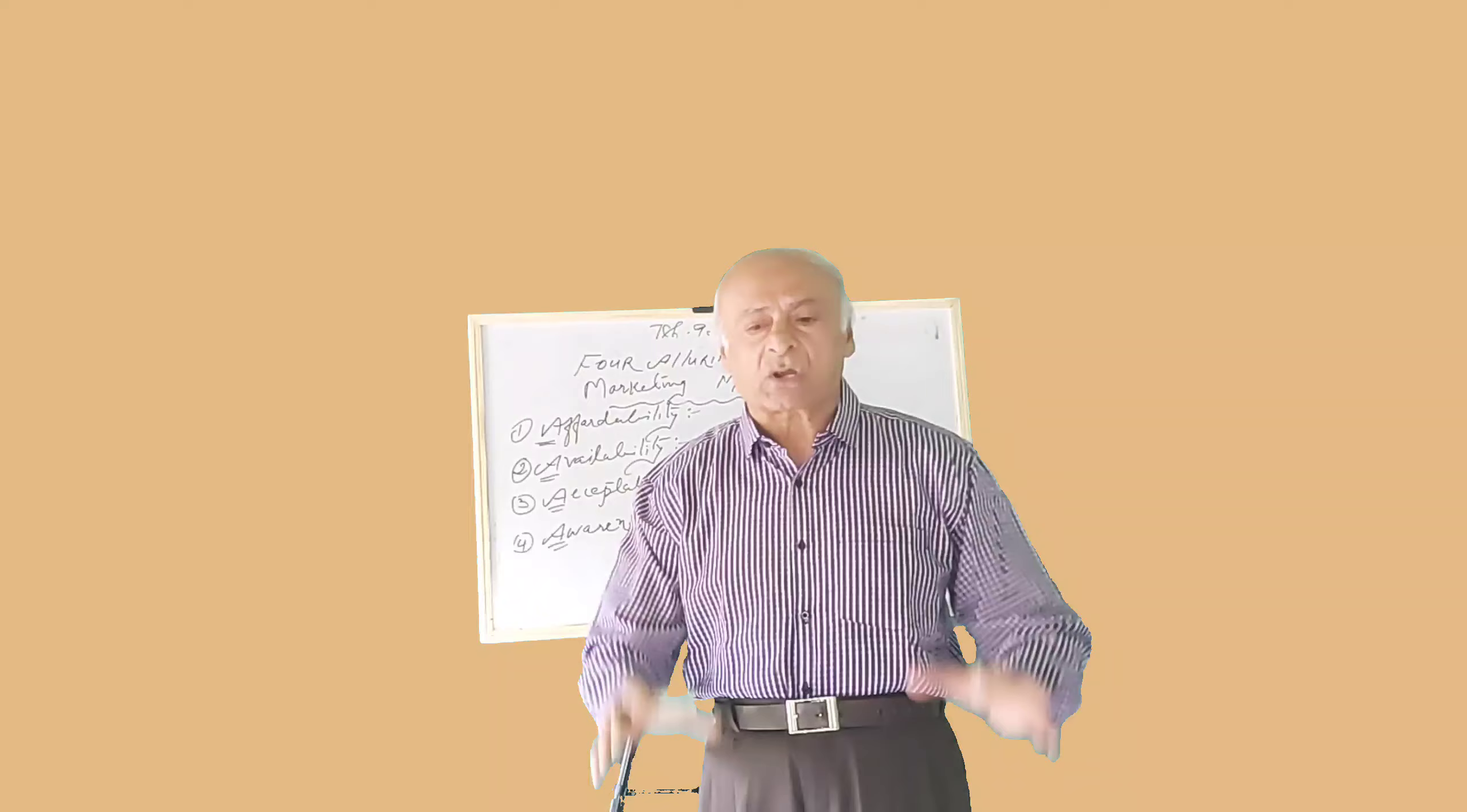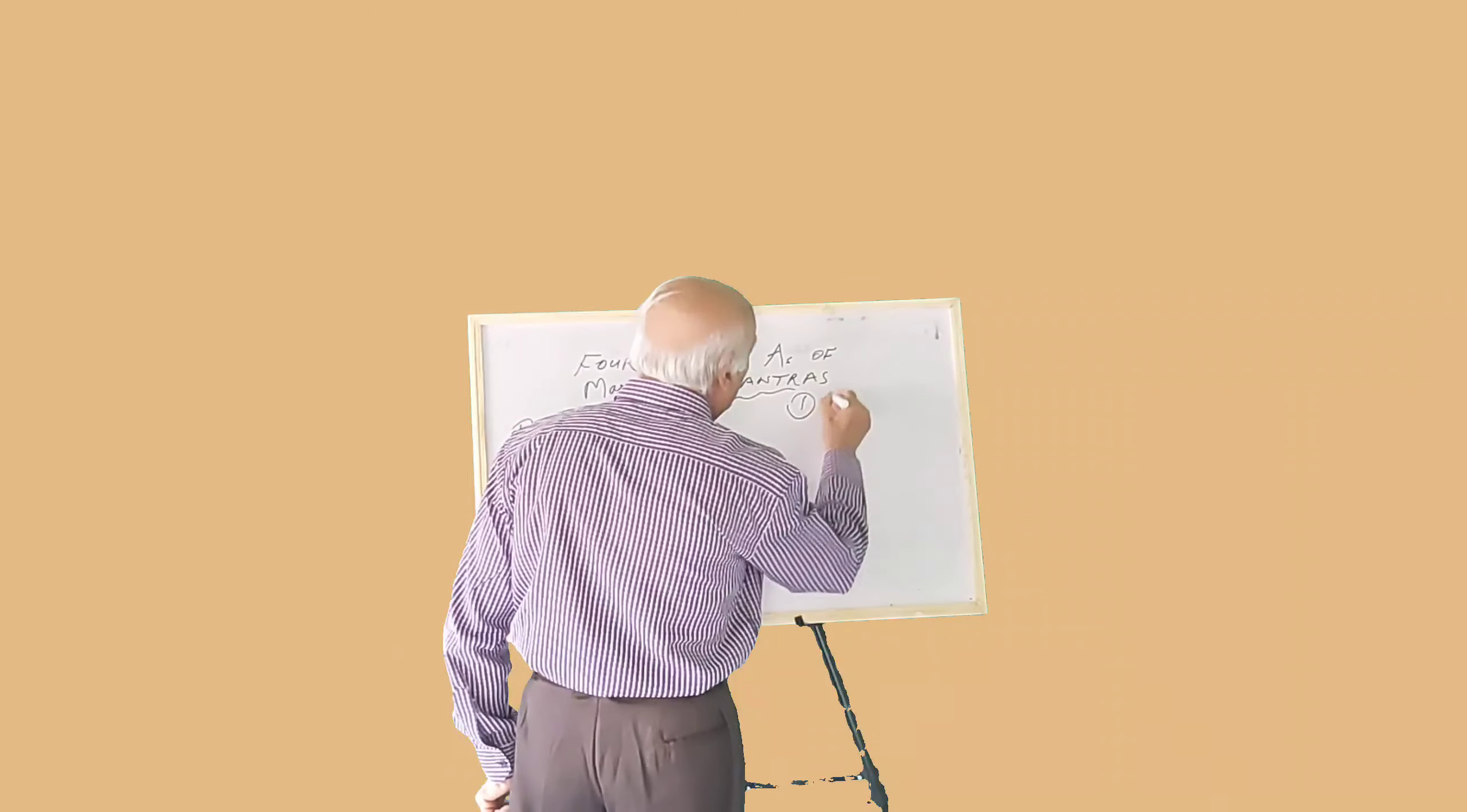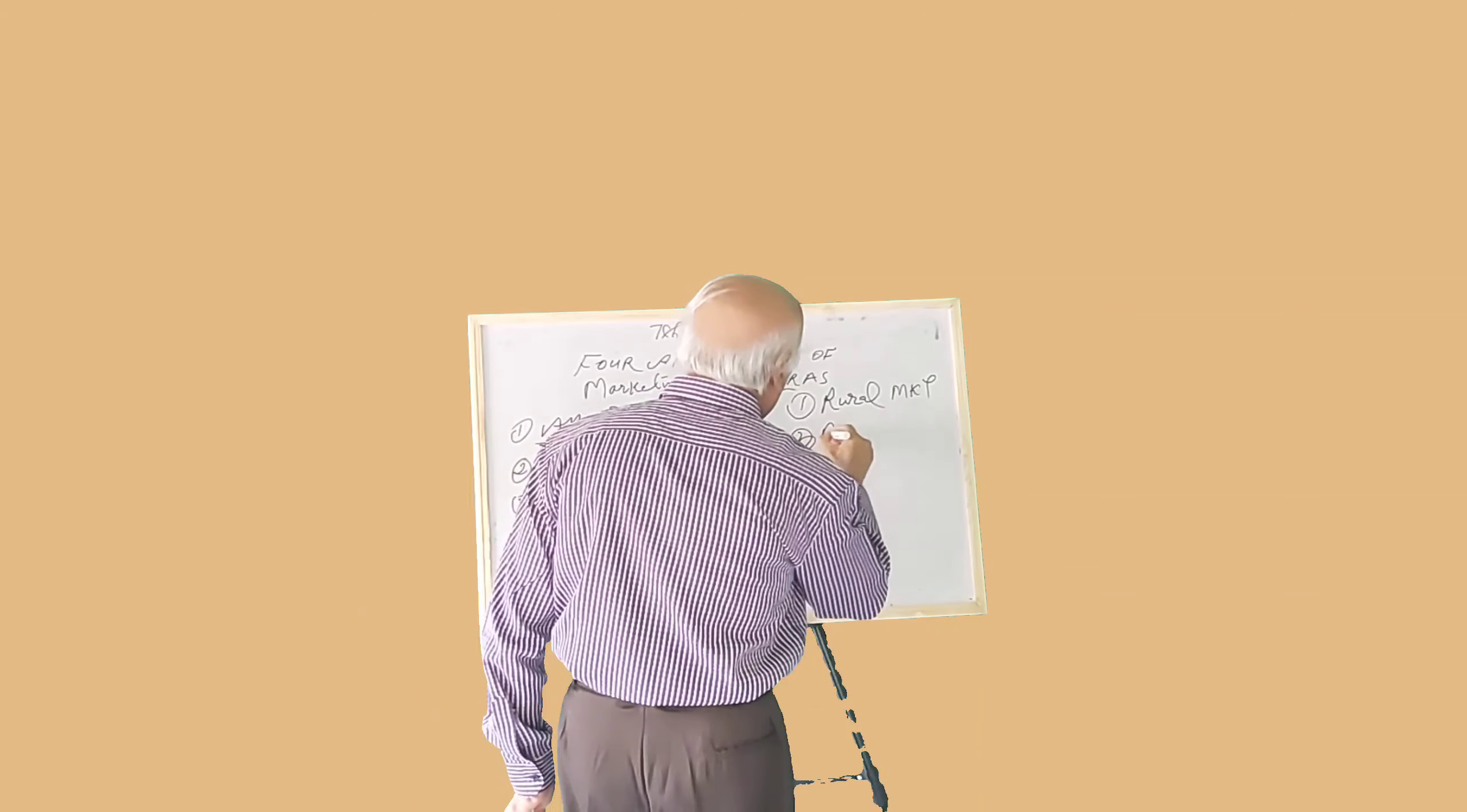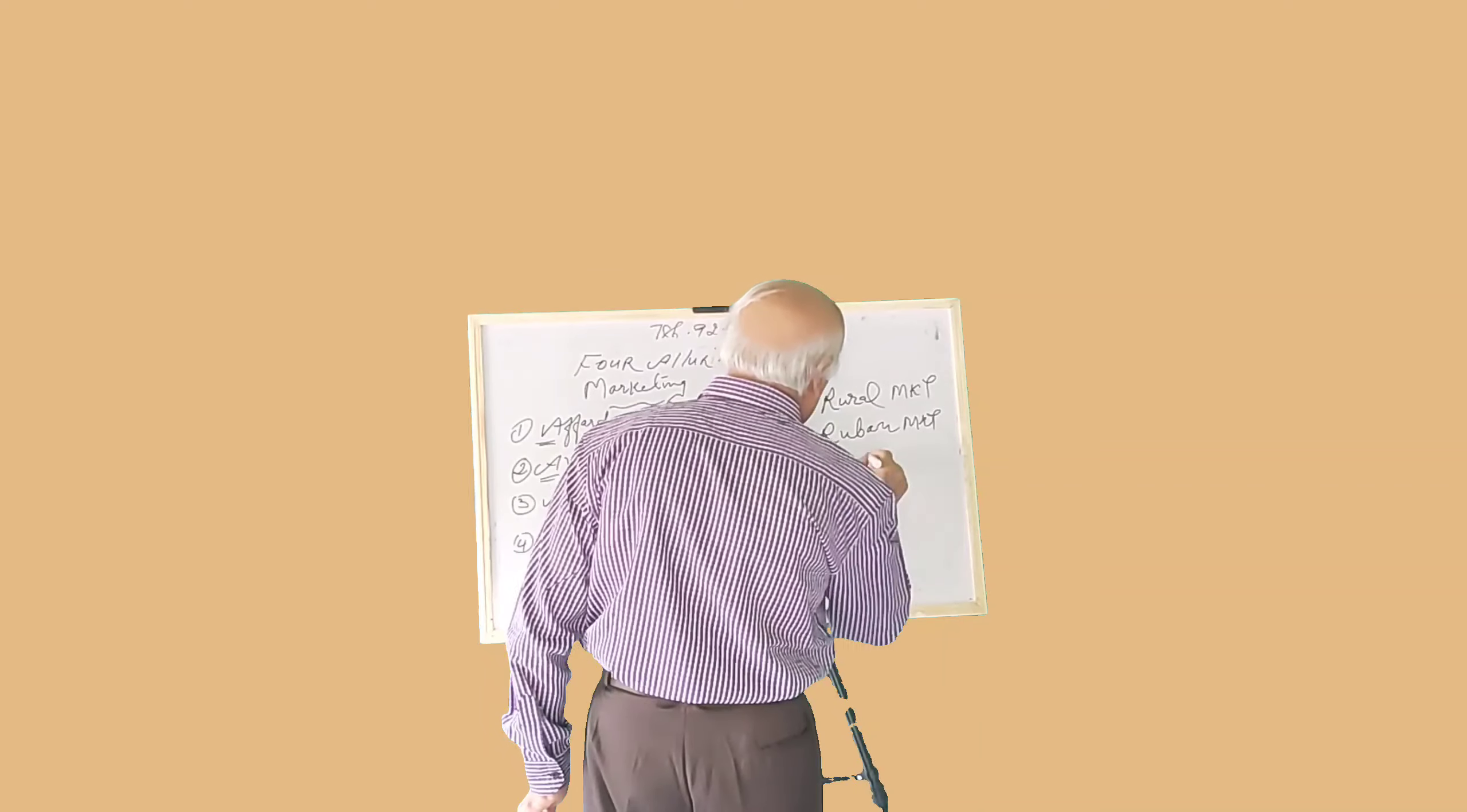But fundamental structure of the market can be categorized by three ways which are number one, rural market. Number two, Ruban market. Number three is Urban market.